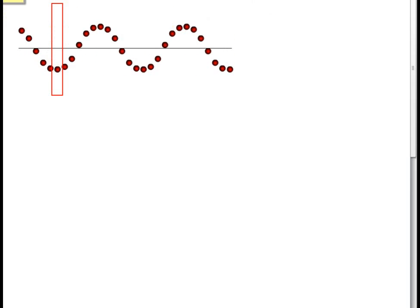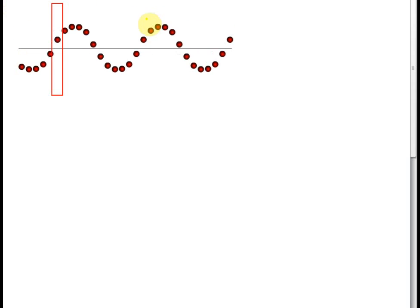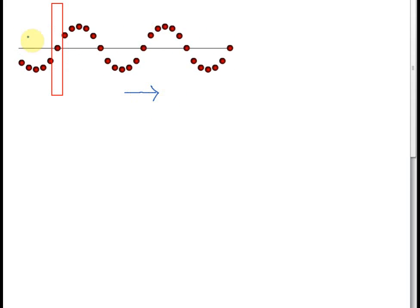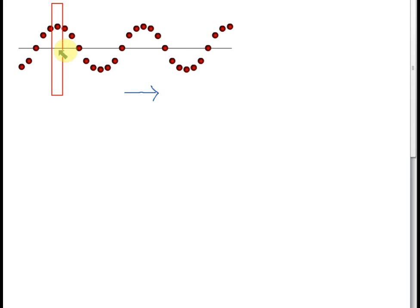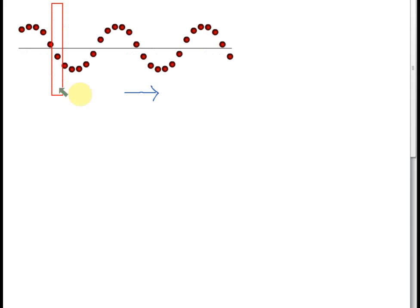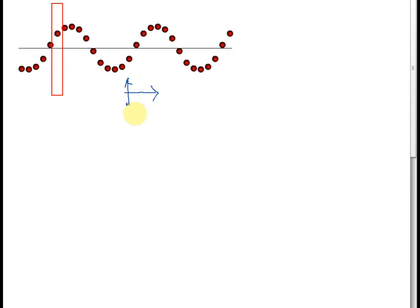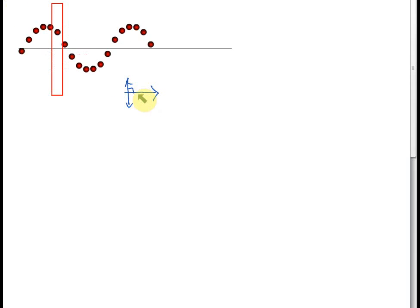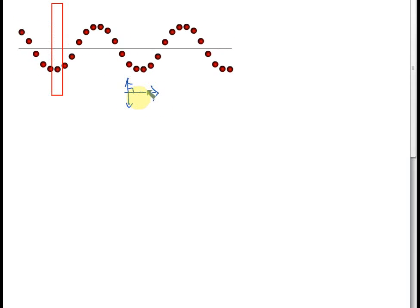You can see the pulse — each crest is a pulse. You can see that the pulse is moving from left to right. But the vibrations of the medium — all these red particles are the particles of the medium — the vibrations of the particles is up and down. So the vibrations of the particles is at right angle, 90 degrees, to the direction of the wave.